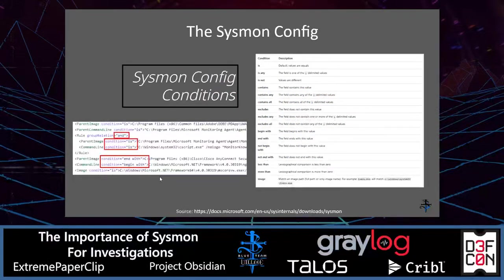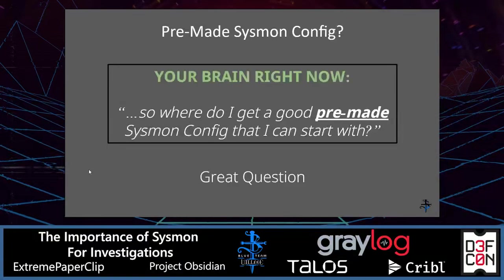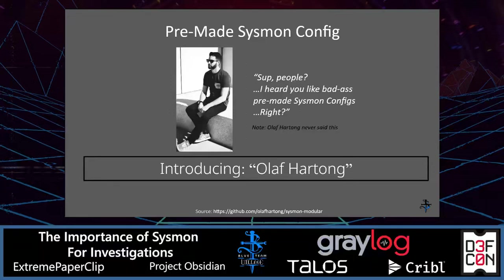There are various conditions you can use in the Sysmon config, such as 'equals', 'is', 'end with', and 'begin with'. If you're wondering where to get a good pre-made Sysmon config, Olaf Hartong has a great one. He also makes a modular Sysmon config that makes it very easy to customize your rules for each event ID. Big thanks to Olaf for making such a great Sysmon config.